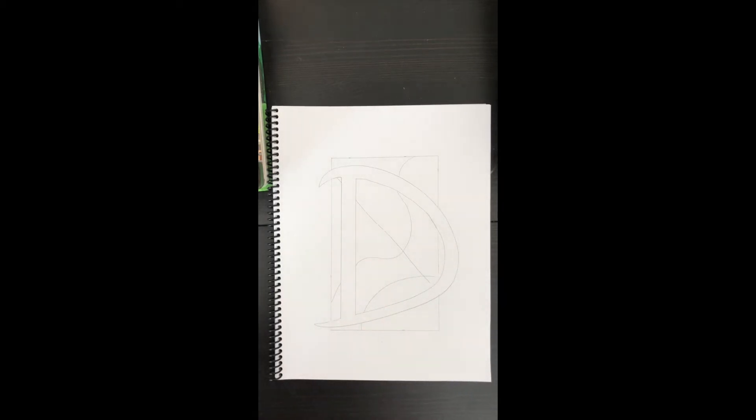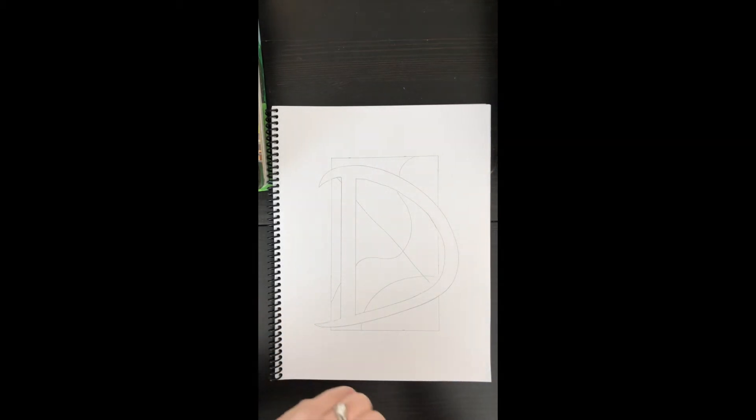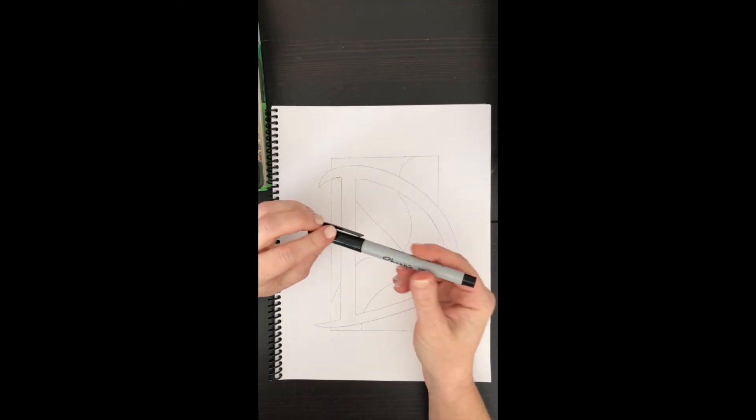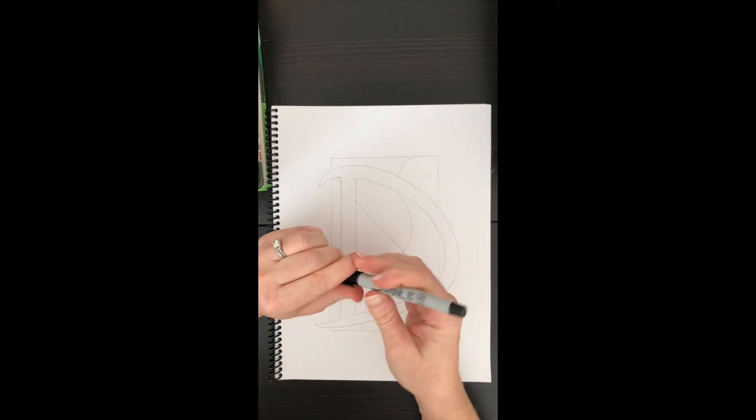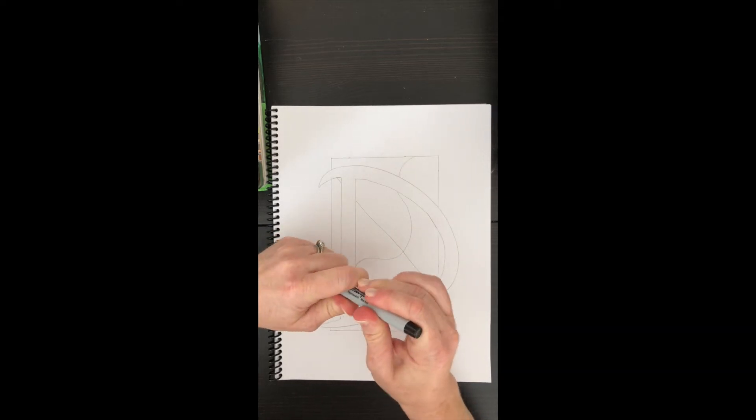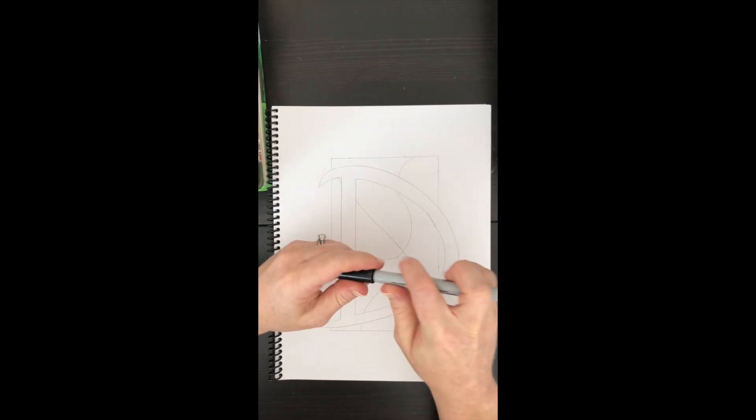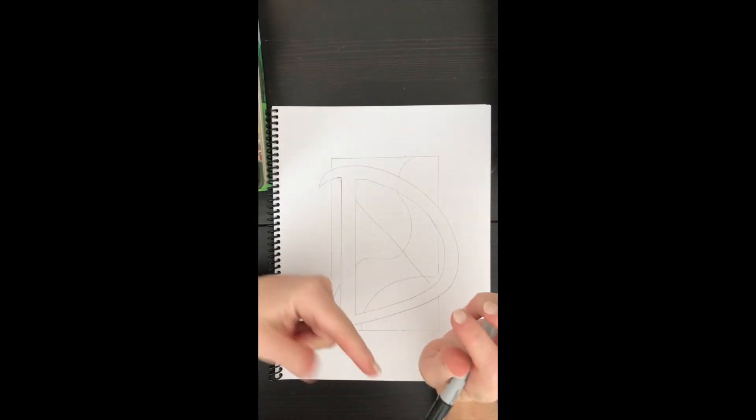Now, a lot of times with zentangles you want to just start off with pen. I know that seems kind of scary to start with pen and not with pencil, so it's up to you. If it makes you really uncomfortable, you can start with pencil and then go over with pen, but I'm going to start with pen.